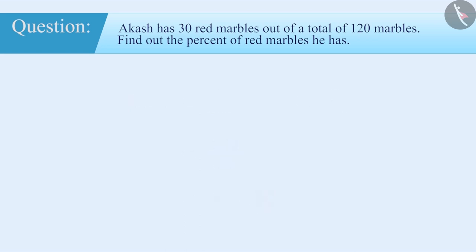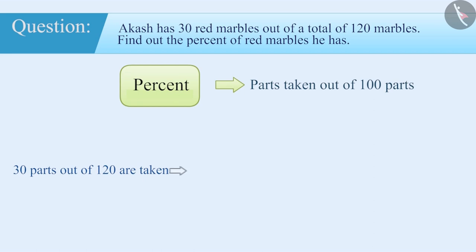Let us find out the correct answer. Percent means the number of parts taken out of 100 parts. Here, 30 parts are taken out of 120. So, we will find out if 30 parts are taken out of 120, then how many parts will be taken out of 100?